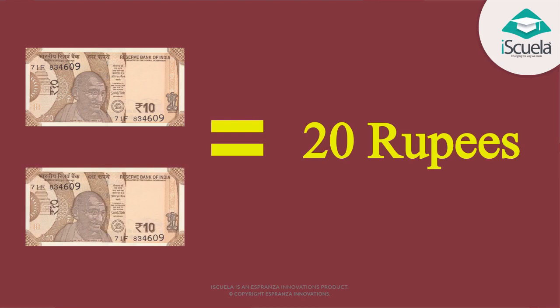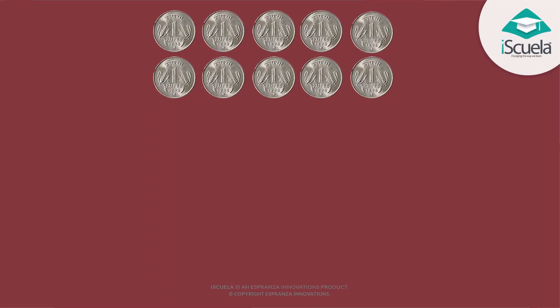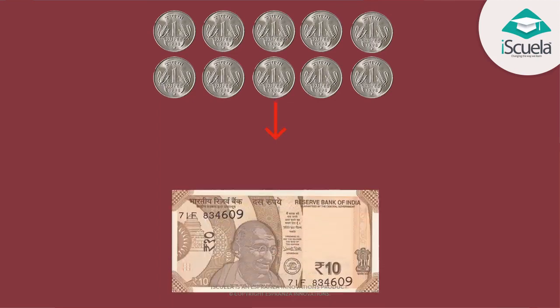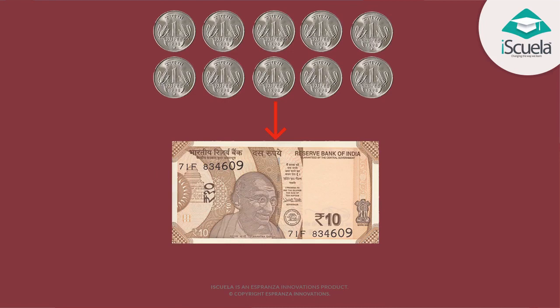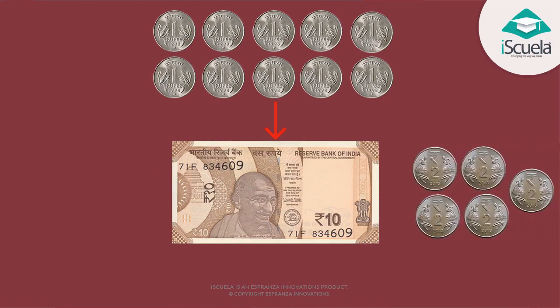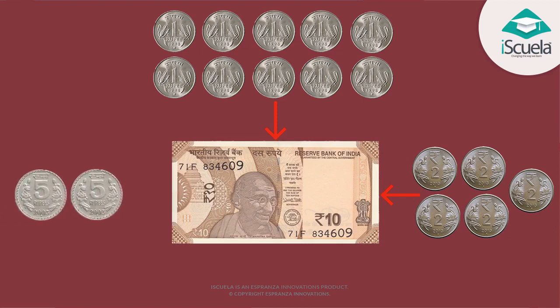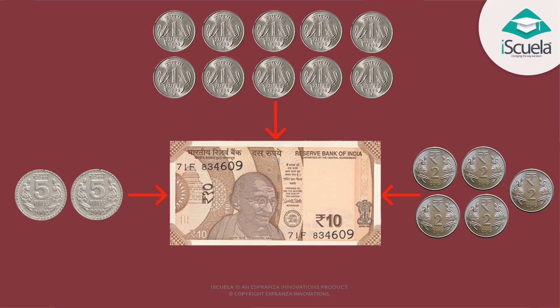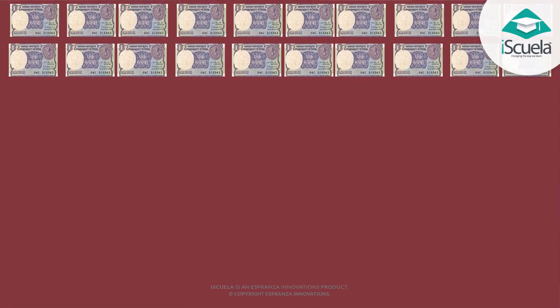We can convert coins of less value which are equal to notes or coins of greater value. How can we do it? 10 coins of 1 rupee each becomes 10 rupee. 5 coins of 2 rupee each becomes 10 rupee. 2 coins of 5 rupee each becomes 10 rupee.